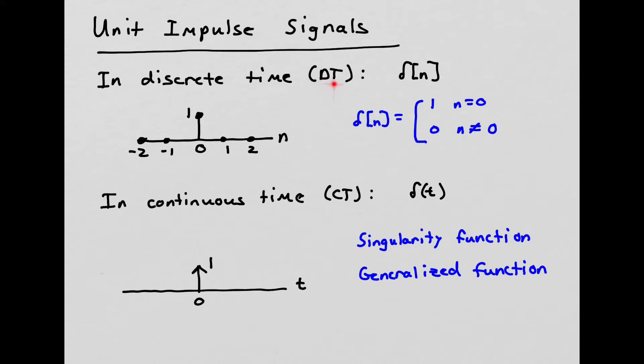Now, in the discrete time domain, the unit impulse signal is a very simple signal. It's simply 1 at n equals 0 and 0 at all other time points. So it's indicated by the symbol delta of n, and again, the definition is simple. It's 1 when n is equal to 0, and it's 0 everywhere else.